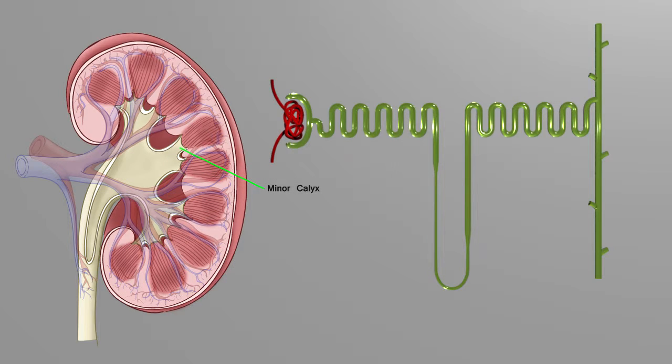Once the filtrate flows into the minor calyx, that is where urine is first formed. And once it enters into the structure, it is eliminated, meaning that you are getting rid of it. There's no way to be able to go back and get it out.